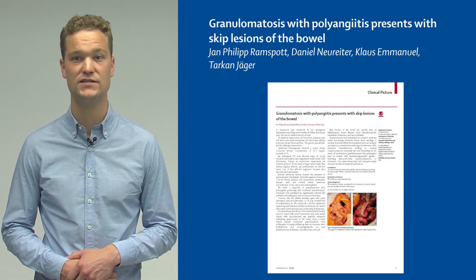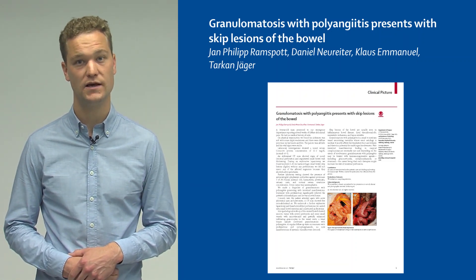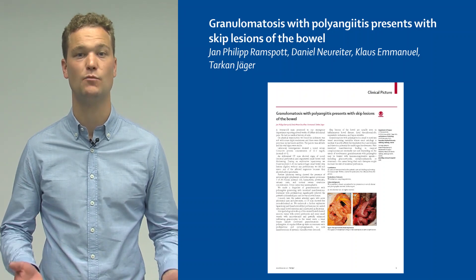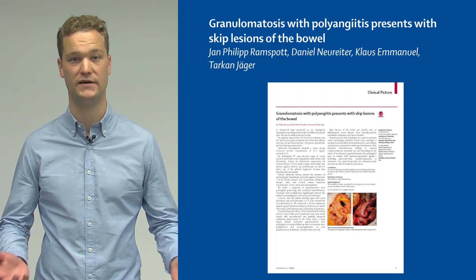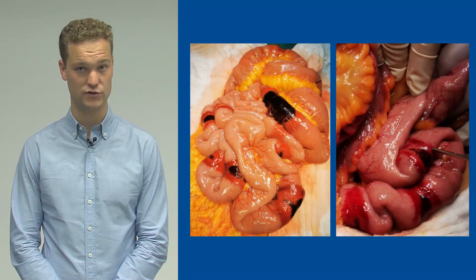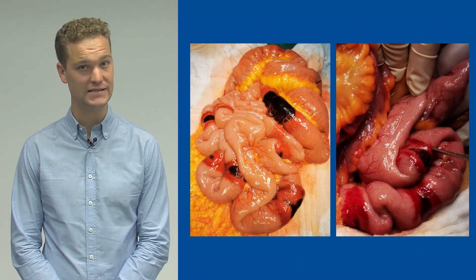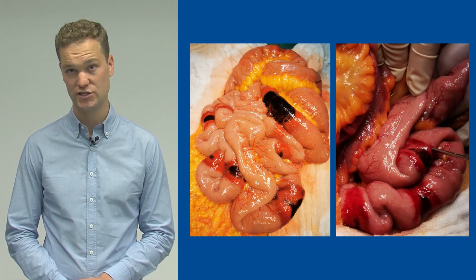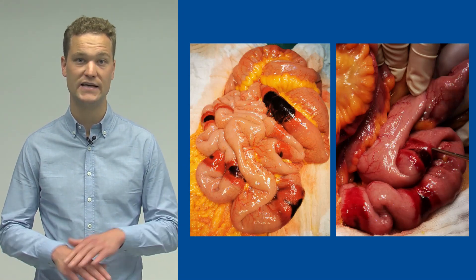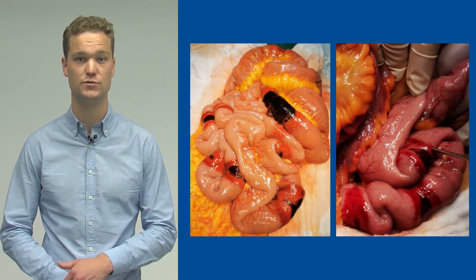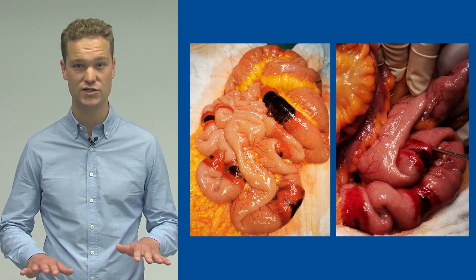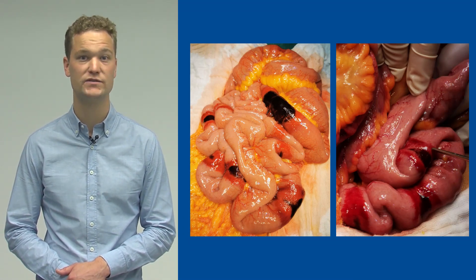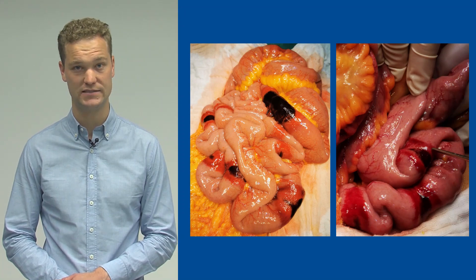CT scan showed signs of occult ileocecal perforation and segmental small bowel wall thickening. On exploratory laparotomy, multiple 5–10 cm hemorrhagic small bowel skip lesions without any perforations were detected. No resection was performed as the affected segments showed active peristalsis.